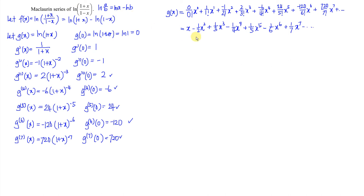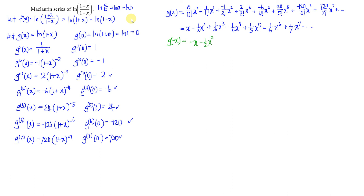Since the plus/minus signs alternate, the next term is positive 1/7 · x⁷. Next, we replace x with −x to get g(−x). We have odd powers and even powers — for even powers, (−1)² = 1, so the sign changes. For odd powers, the sign changes as well. So even powers remain the same sign, and odd powers change sign.